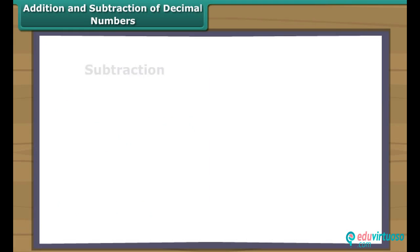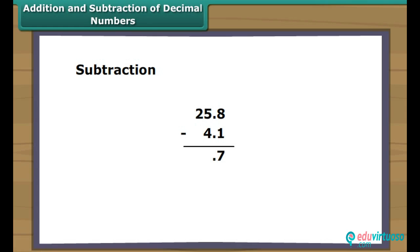Similarly, we can subtract one decimal number from another. Here we subtract first the digits at the right side of the decimal, followed by those at the left side.